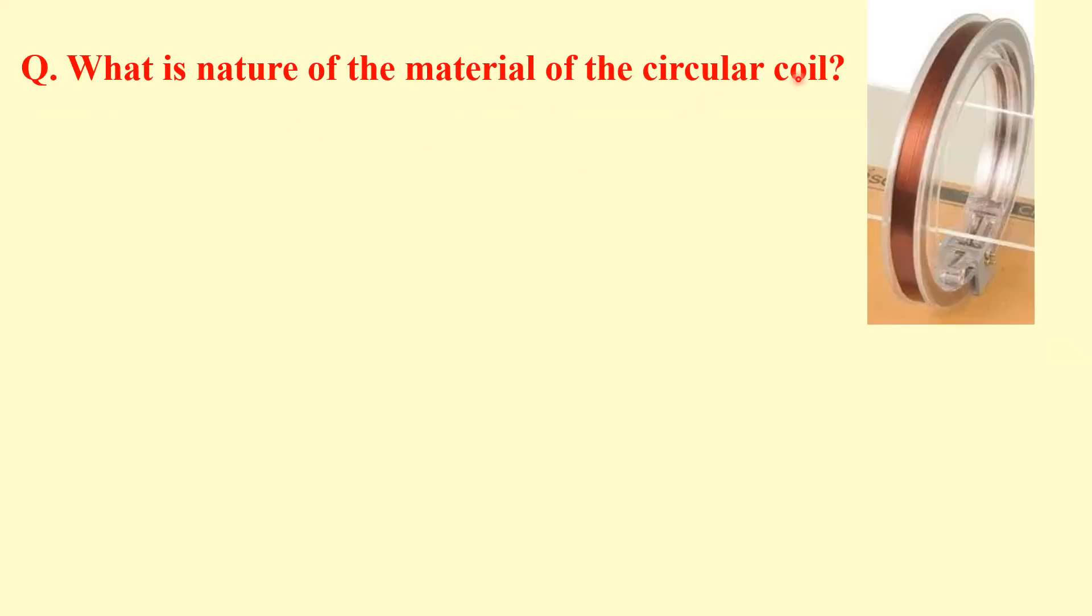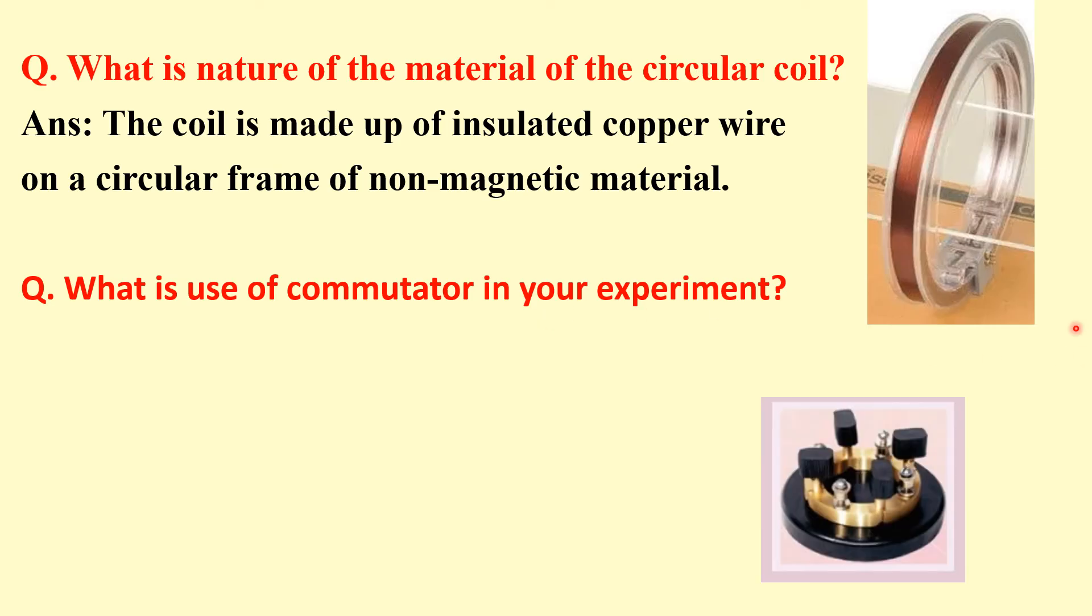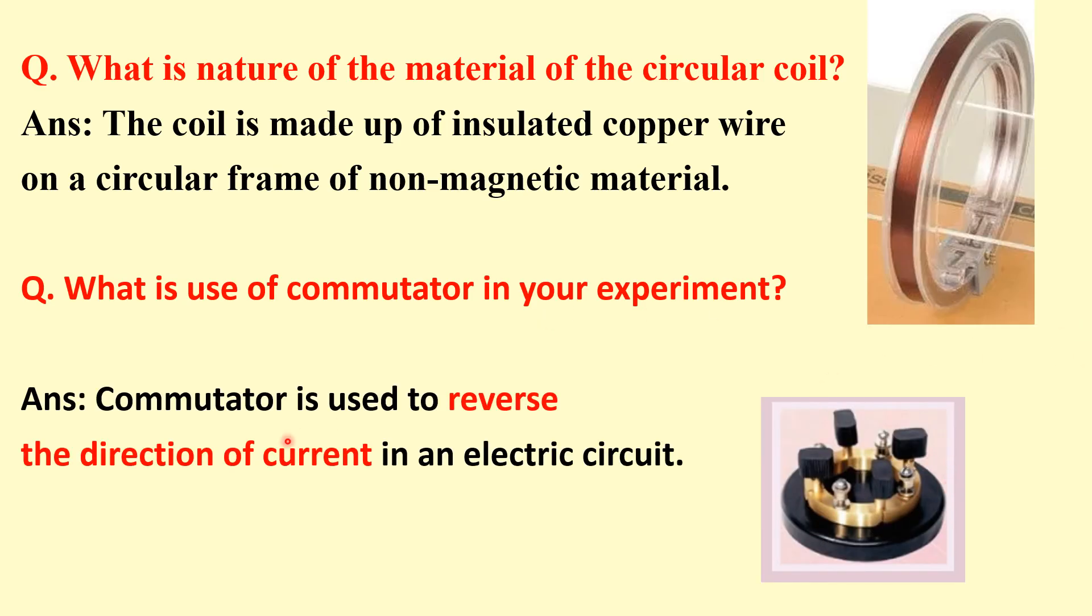What is the nature of material of the circular coil? The coil is made of insulated copper wires on a circular frame which is non-magnetic material. What is the use of commutator in your experiment? This was the commutator. Commutator is a device to reverse the direction of current in an electrical circuit.